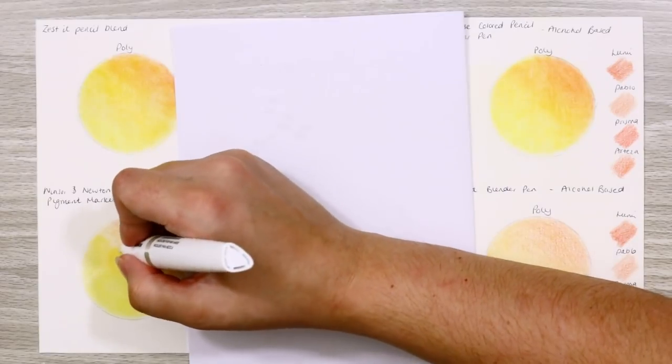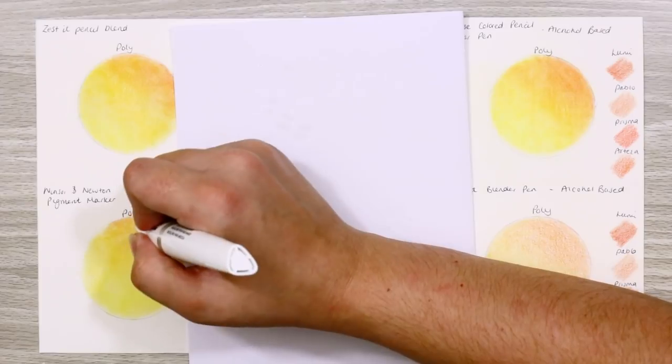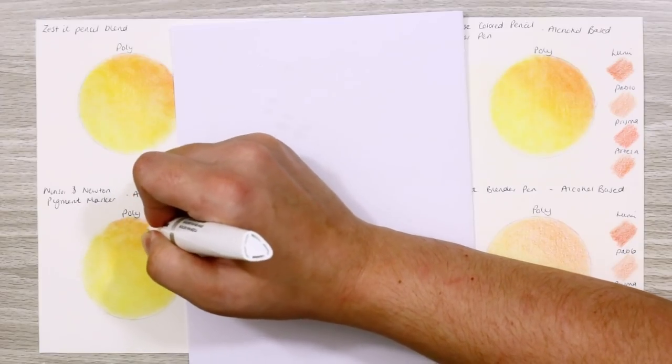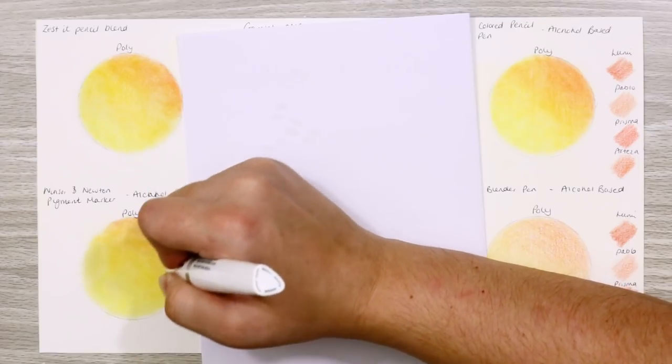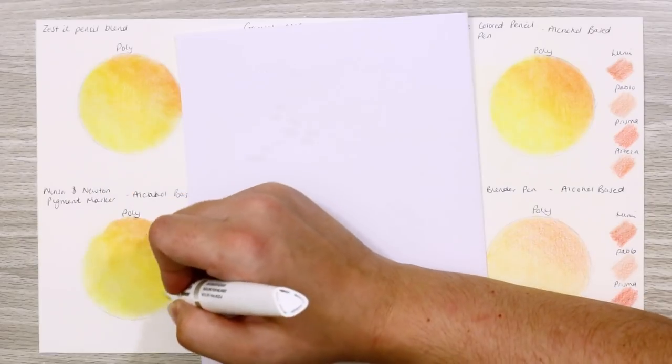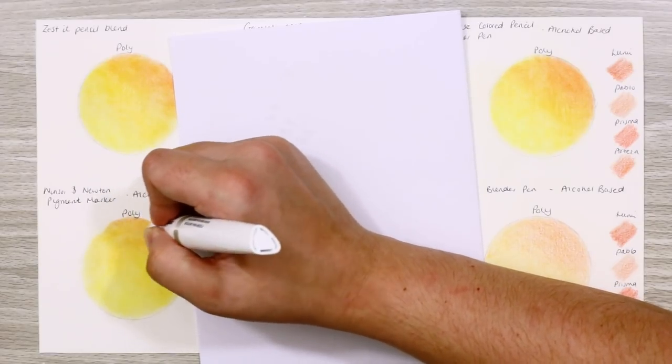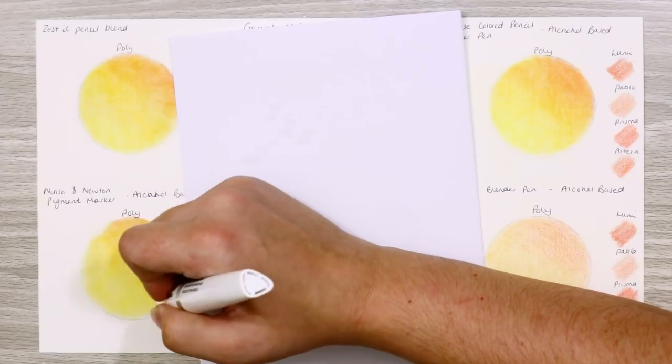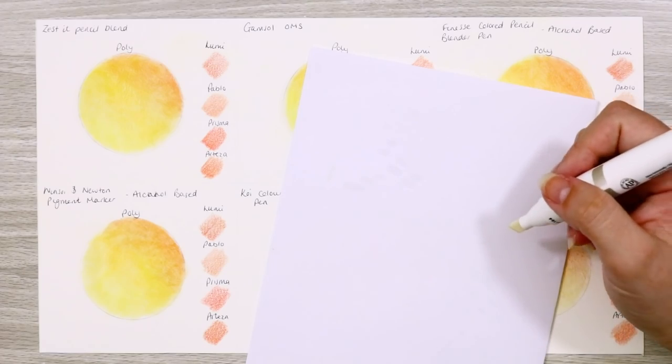I found that this product moved the pigment around so much and it also diluted the color way too much for my liking. Compared to the other circles, this one is just so dull. You normally expect to see a liquid based blender brighten and strengthen the color, but this did the exact opposite. Maybe I didn't use it quite right or put too much down, I don't know, it just wasn't working like the other methods of blending.